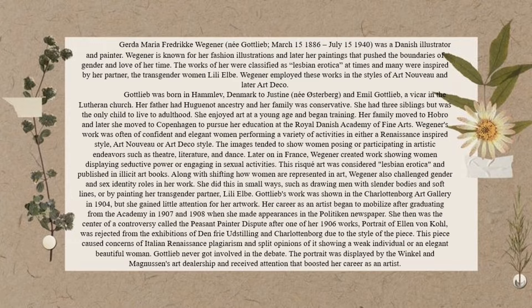Many of her works were inspired by her partner, the transgender woman Lili Elbe. Wegener employed these works in the styles of Art Nouveau and later Art Deco. Gottlieb was born in Hamley, Denmark, to Justin and Emil Gottlieb, a vicar in the Lutheran church. Her father had Huguenot ancestry and her family was conservative. She had three siblings but was the only child to live to adulthood.